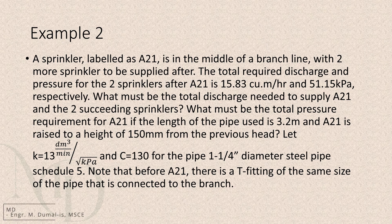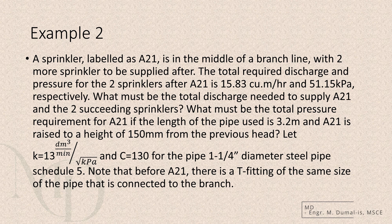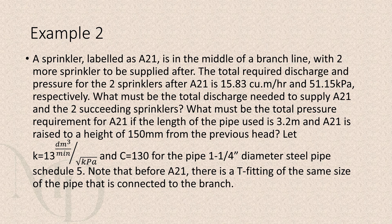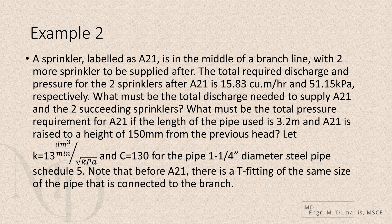So, let's move on to the next problem. A sprinkler labeled as capital A21 is located in the middle of a branch line, with two more sprinklers to be supplied downstream. The total required discharge and pressure for the two sprinklers after capital A21 is 15.83 cubic meters per hour and 51.15 kilopascals respectively. What must be the total discharge needed to supply capital A21 plus the two succeeding sprinklers?